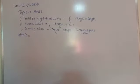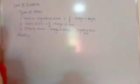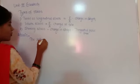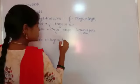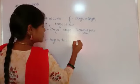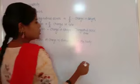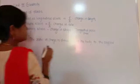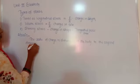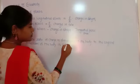Strain is the measurement of deformation of a body when two equal and opposite forces are applied on an elastic body, causing a change in its dimensions. The definition of strain is: the ratio of change in dimension to the original dimension of the body is called strain.